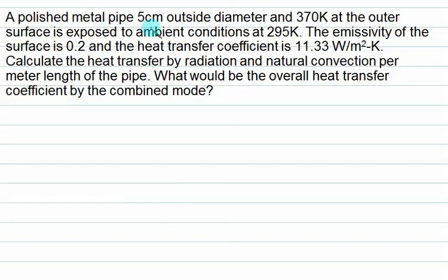A polished metal pipe with 5 cm outside diameter at 370 K outer surface temperature is exposed to ambient conditions at 295 K. The emissivity of the surface is 0.2 and the heat transfer coefficient is 11.33. This involves heat transfer by natural convection. Per meter length of pipe, what is the overall heat transfer coefficient by the combined mode?